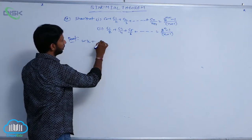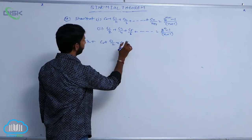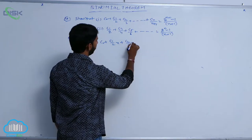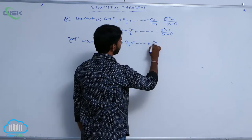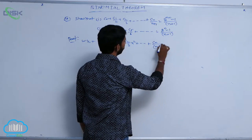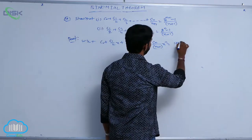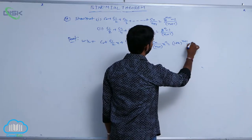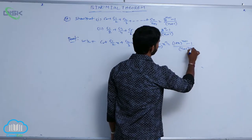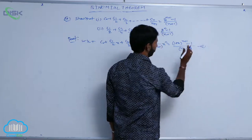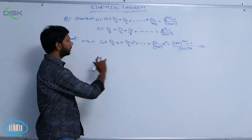We know the formula: C₀ + C₁/(2) · x + C₂/3 · x² + ... + Cₙ/(n+1) · xⁿ = [(1+x)^(n+1) - 1] / [(n+1)x]. Consider this as condition number 1.